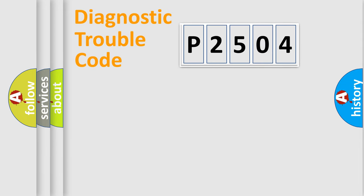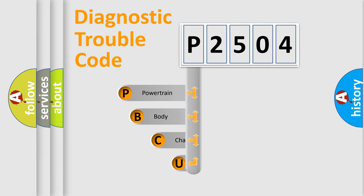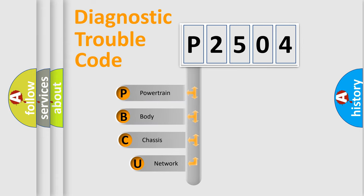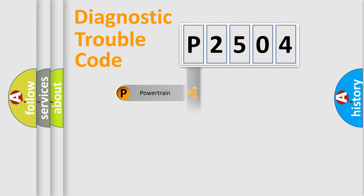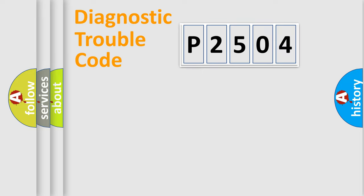Let's start by looking at the history of diagnostic fault code composition according to the OBD2 protocol, which is unified for all automakers since 2000. We divide the electric system of an automobile into four basic units: Powertrain, Body, Chassis, and Network.